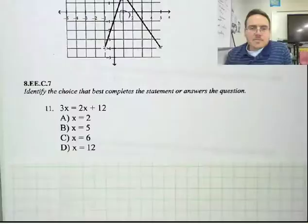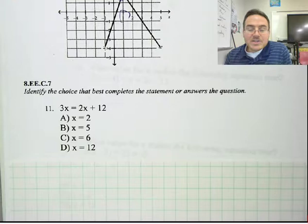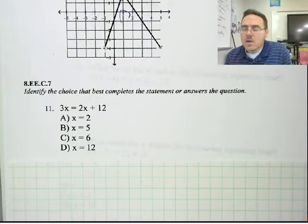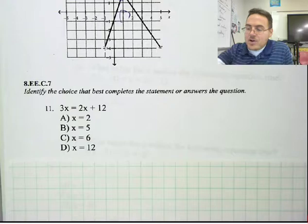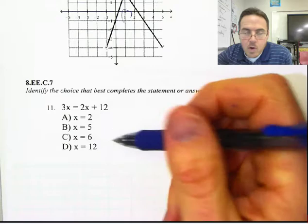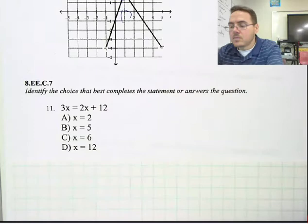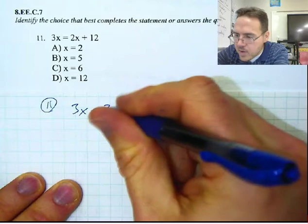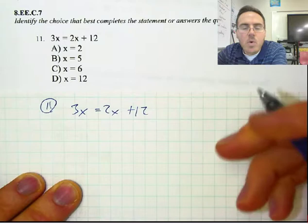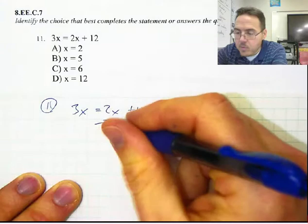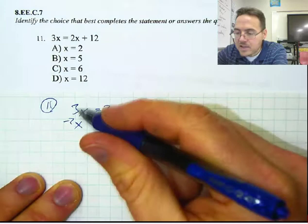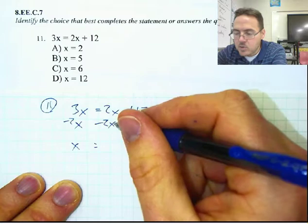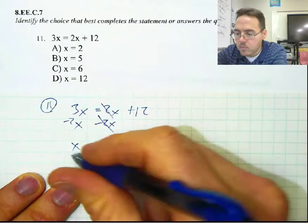For number 11, we've got an equation and I'm asking you to tell me which value makes it true. There are really two ways: you can plug in all of these values one at a time, or you can do this algebraically. When I have 3X equals 2X plus 12, I just want to do some undo math to get X by itself. Let's take away 2X from both sides. 3X minus 2X is just X, and 2X minus 2X is nothing — that's zero. So X equals 12, and the answer is D.